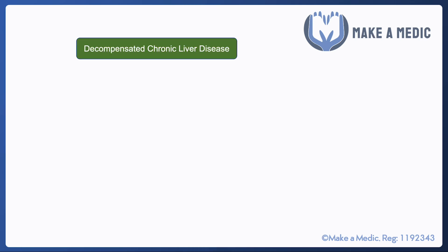Chronic liver disease can be quite stable for a long time; however, certain insults such as drinking alcohol or infections can cause decompensation. Decompensation means the liver has been doing just about enough to carry out most of its normal functions, but some insult has meant it is failing to do so. As a result patients develop ascites, which is a common presentation of decompensated chronic liver disease, and there are a few key investigations that help us manage it.